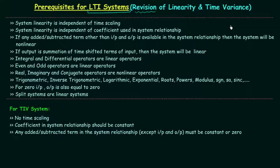To check if a given system is linear or non-linear, we need the system relationship. Using it, we can check if the system follows the law of additivity and the law of homogeneity. If the system follows both laws, we say it follows the principle of superposition, and such systems are known as linear systems. If any one of the two is violated, the system is non-linear.